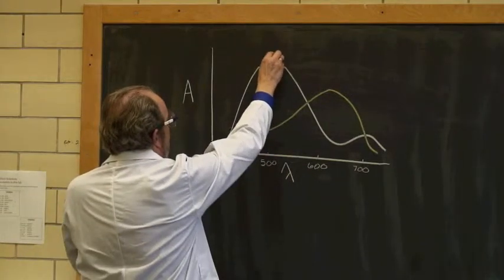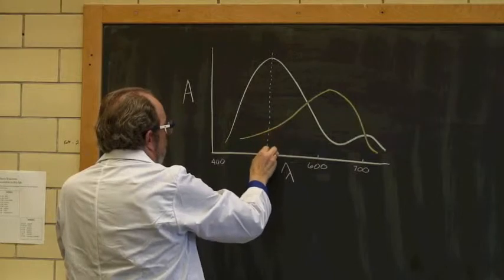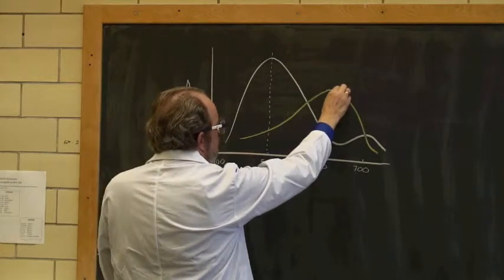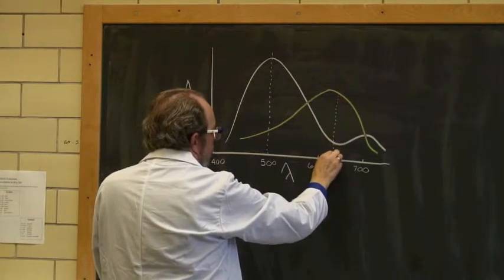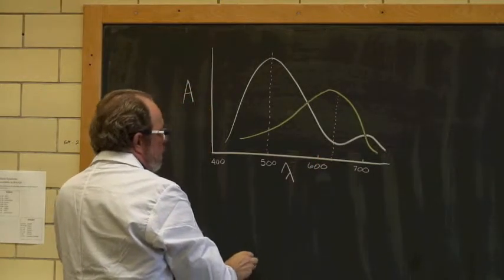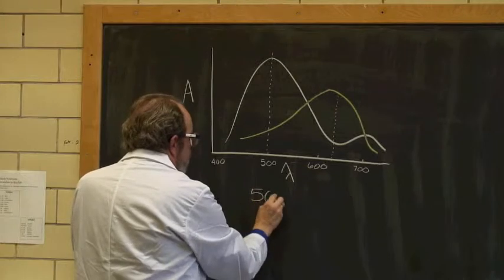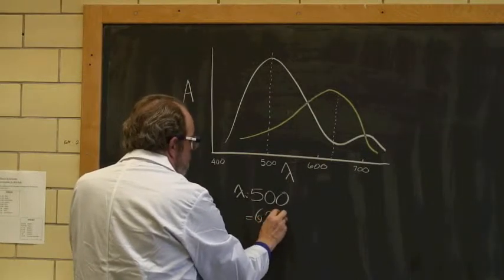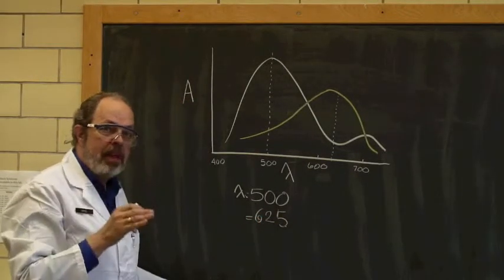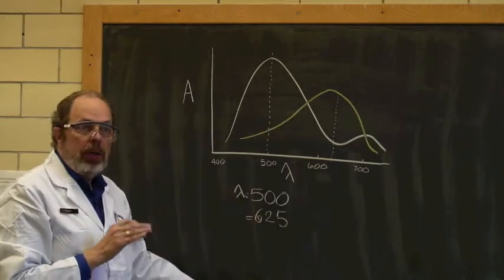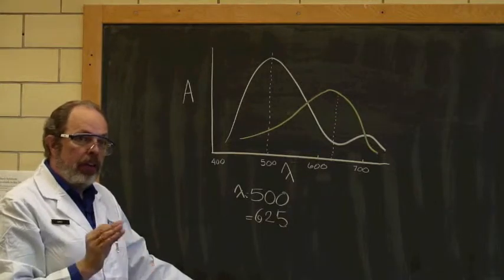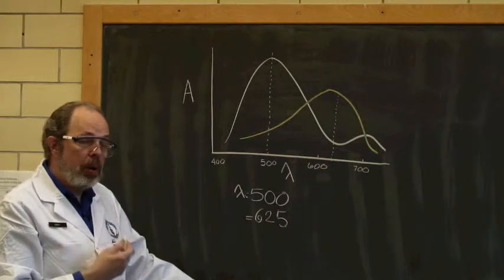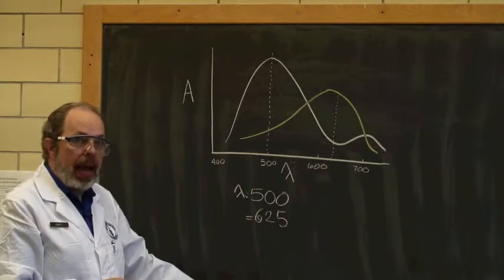Run Beer's Law two separate times and determine the concentrations. In this case, rather than going for lambda max, you want the wavelength where the two are most different. In this case, probably this colored species, you would run it there. Where you've got most change is probably about here, which is about 630. So I would read the solutions at lambda equals 500 and at lambda equals 625.